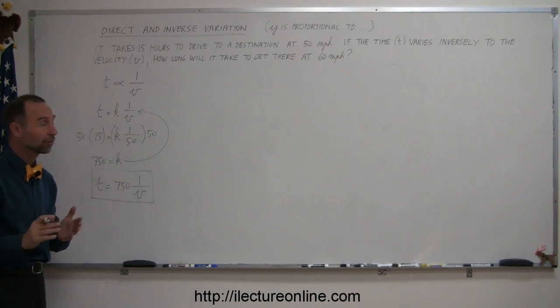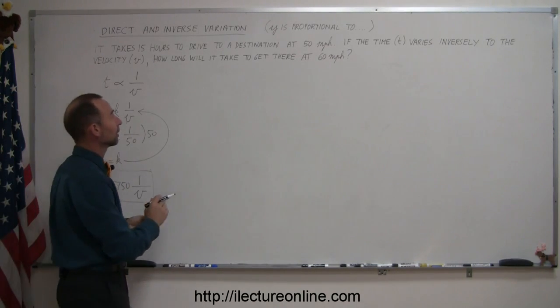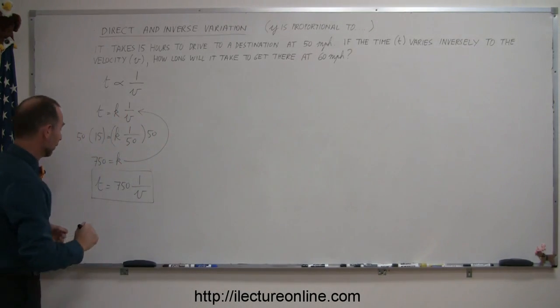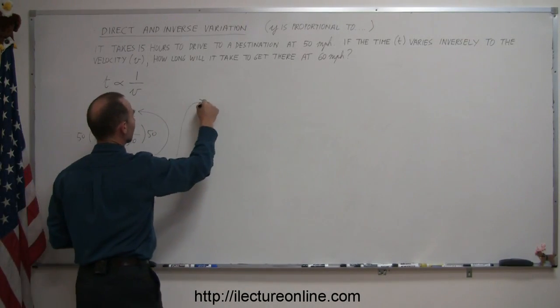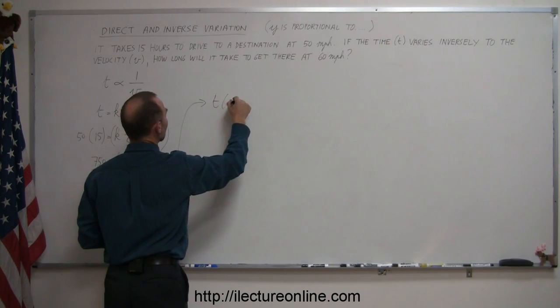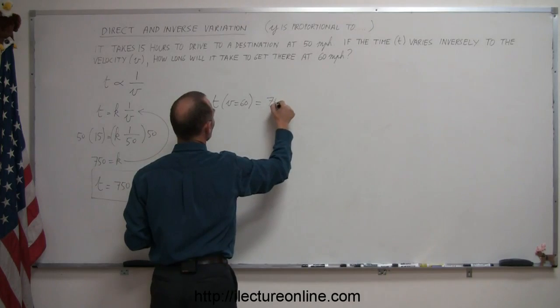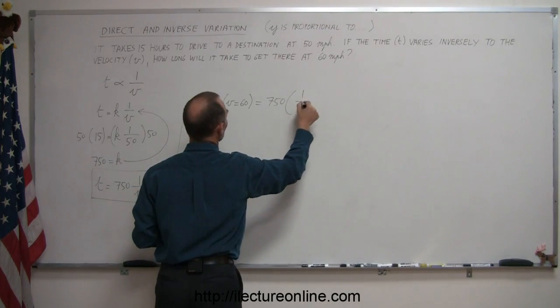So now I can solve the second part. Now we can figure out how long it will take to get to the same destination traveling at 60 miles per hour. So we can say that t, when v equals 60, is equal to 750 times 1 over 60.